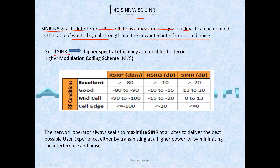The higher your SINR, the higher will be your spectral efficiency. Because your modulation schemes are higher if the SINR is higher — so good SINR leads to a good modulation scheme and hence better spectral efficiency. In other words, better user experience and increased throughput. So every network operator will seek to maximize their SINR values.